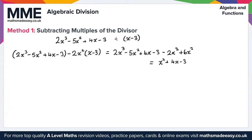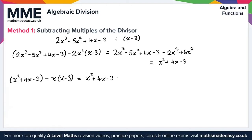Now we're on to step two where we repeat this process to remove all powers of x. We subtract x lots of x minus 3 to remove the x squared term. Expanding, we get x squared plus 4x minus 3 minus x squared plus 3x. The x squared terms cancel, leaving us with 7x minus 3.